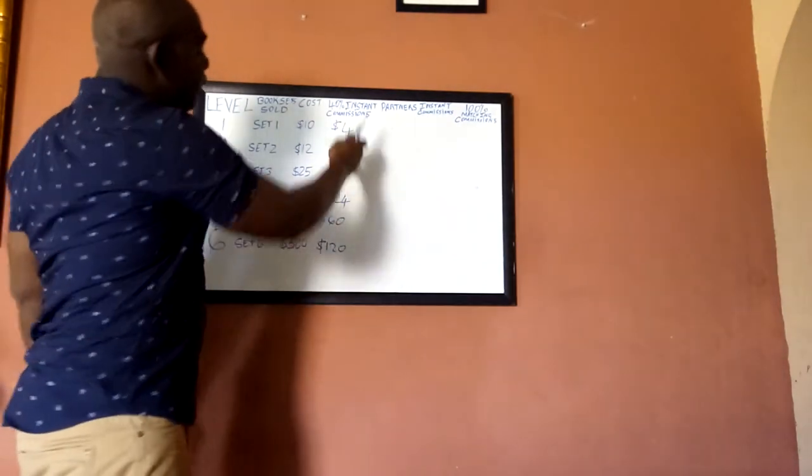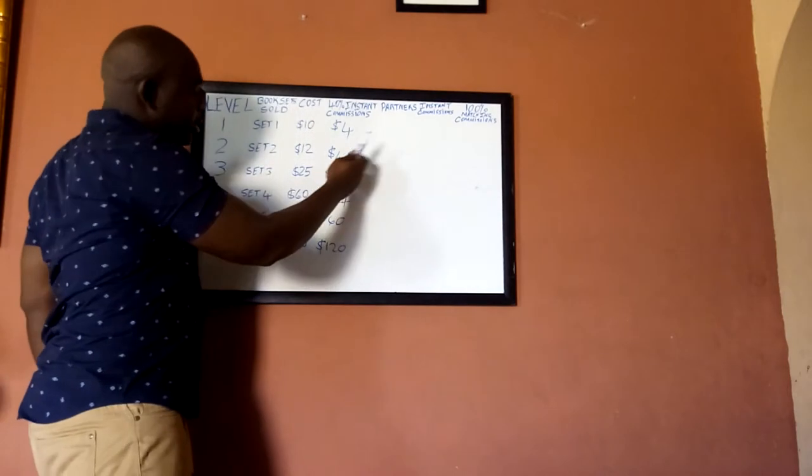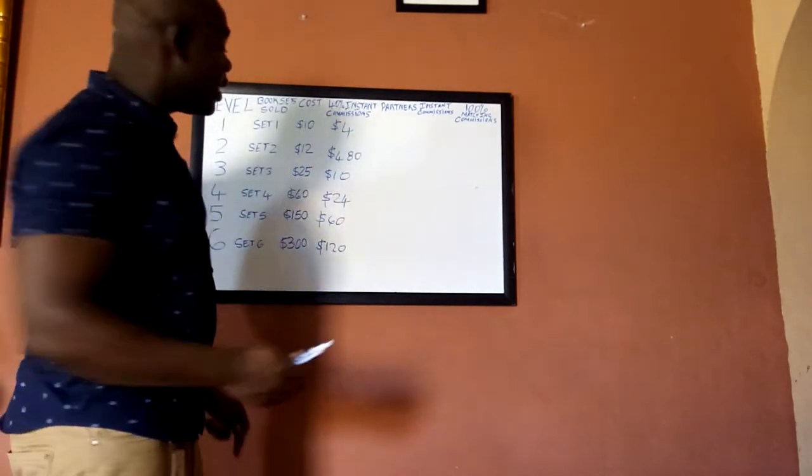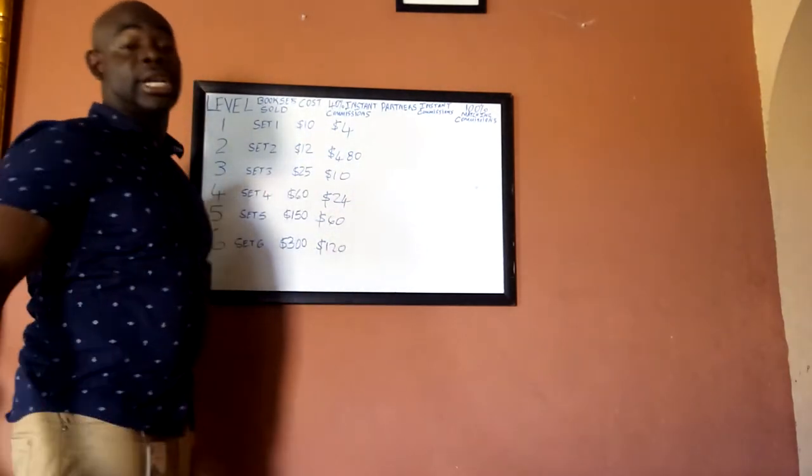So for example, level one book set costs $10 so you get $4 commission, 40%. Level two, $12 for that set, then you get paid 40% which is $4.80 on that level, and the list continues all the way down, same formula.